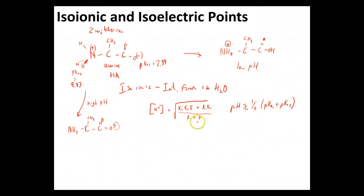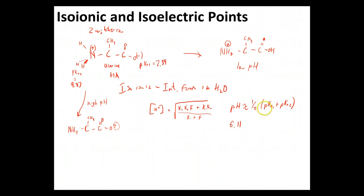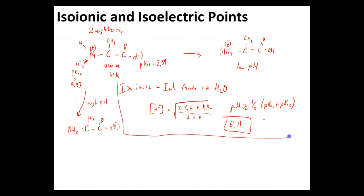If we plug it all in and do the full calculation — as shown in the textbook for a 0.1 molar solution — we end up getting a pH of 6.11. It turns out the quick gut check gives the same number, but that's mostly a function of using 0.1 molar alanine; different concentrations will give different results. So this will be our isoionic case for alanine, with isoionic pH at 6.11.